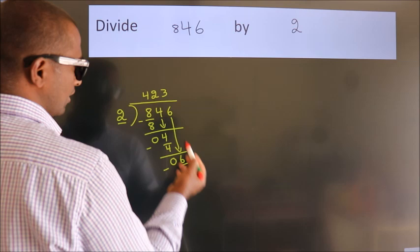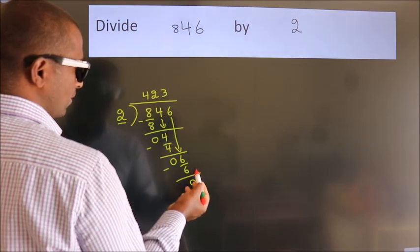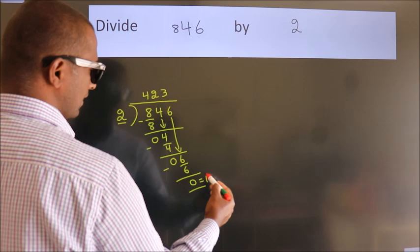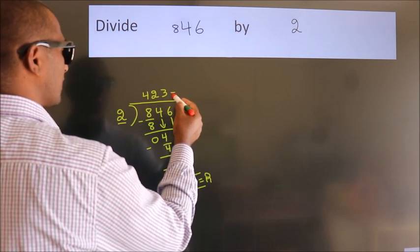After this, no more numbers to bring it down. So we stop here. This is our remainder. This is our quotient.